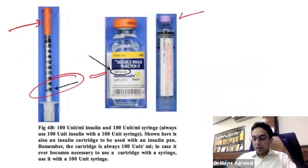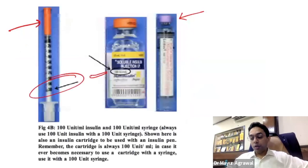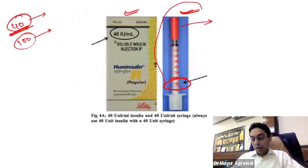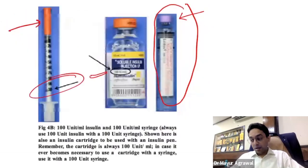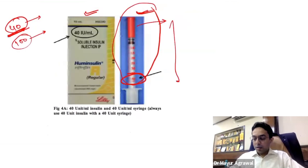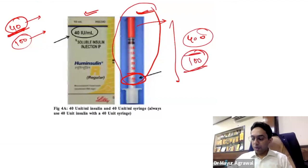Usually chemists — especially in district and rural areas — only keep U40 syringes, not U100 syringes. So when the patient takes insulin from a U100 cartridge using a U40 syringe, he ends up taking 2.5 times the dose. If he fills to what looks like 10 units on the syringe, he has actually injected 25 units. This is because the syringe works in milliliters — 1 ml from a U100 cartridge contains 100 units, not 40.